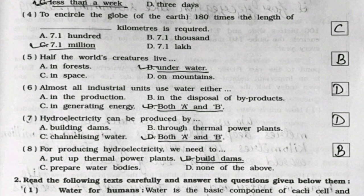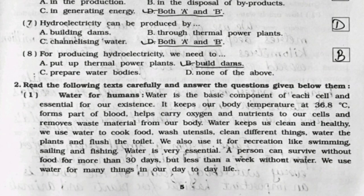Fifth: Half the world's creatures live. It's option B — underwater. Sixth: Almost all industrial units use water either. It's option D — both A and B. Seventh: Hydroelectricity can be produced by option D — both A and B. Eighth: For producing hydroelectricity, we need to — option B, build dams.